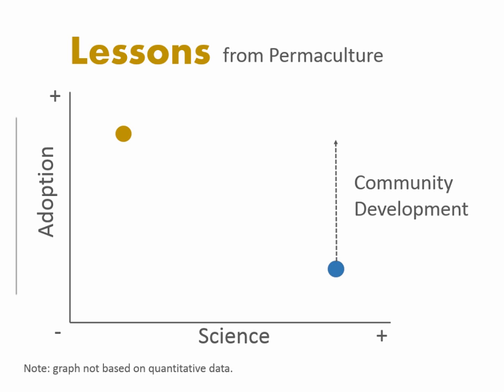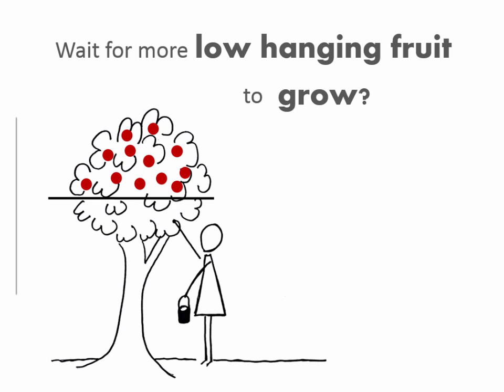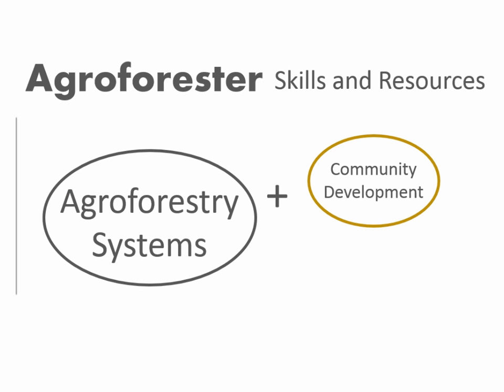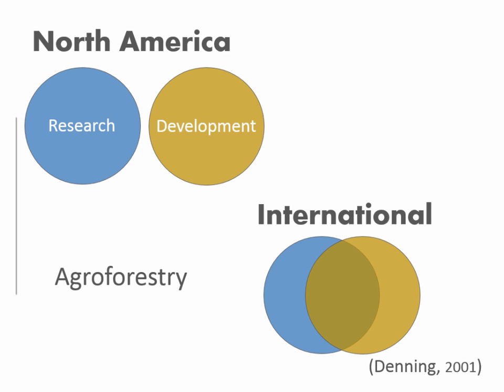Following that train of thought — from permaculture as a social network, to collective action, to community development — we see a key lesson we can learn from permaculture to help increase adoption of agroforestry. Instead of waiting for more low-hanging fruit, agroforestry may be able to look to community development as a new way to reach new audiences, which may require developing more skill sets in community development or engaging with someone who has that skill set on interdisciplinary teams.